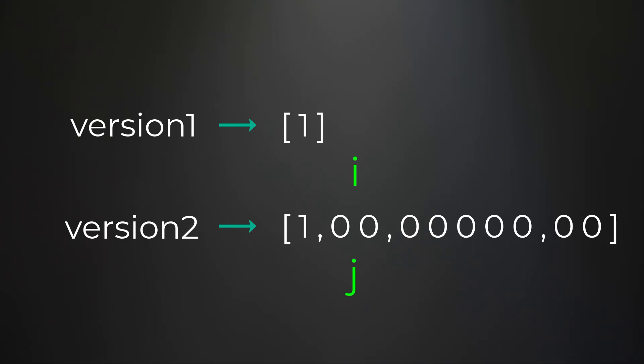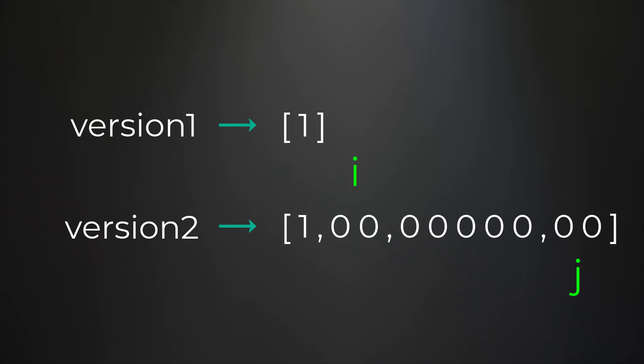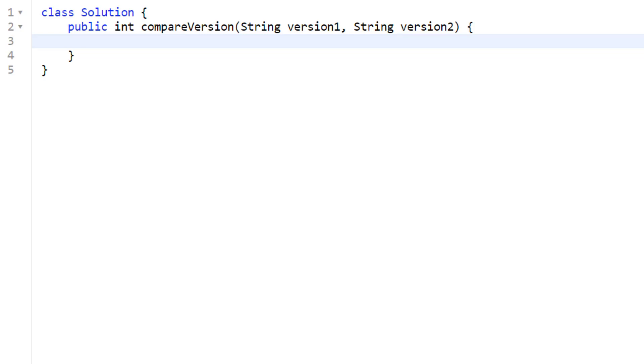Converting the first revisions to integers: 1 equals 1, so we move forward. Now pointer 'i' is no longer looking at a valid index. In that case, we default the number to zero — because a missing revision is the same as a zero revision. For example, version string '1' and '1.0' are exactly the same. We keep comparing: 0 equals 0 for revisions one, two, and three. When both pointers are beyond valid indices, the strings are equal, so we return zero.